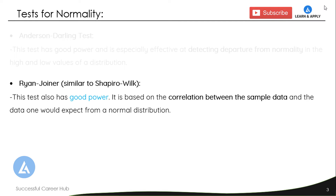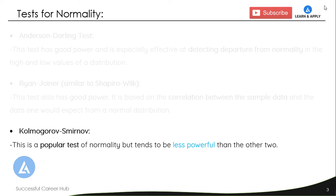The second test is called the Ryan-Joiner test, also known as the RJ test, which is similar to the Shapiro-Wilk test. This test also has good power and is based on the correlation between the sample data and the data one would expect from a normal distribution. The third test is the Kolmogorov-Smirnov test, also called the KS test. This is a popular test of normality, but it has less power compared to the other two tests.